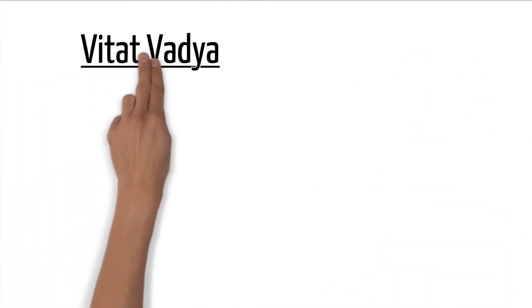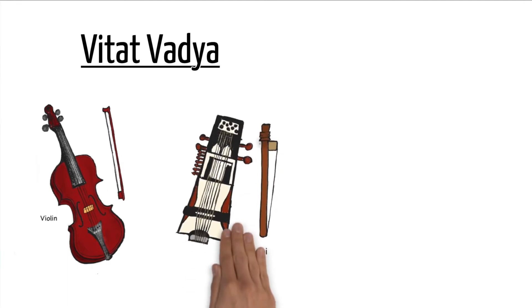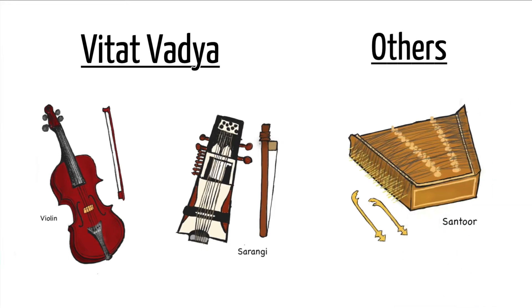We also have string instruments that are played with the bow, which are known as the vithad vadya. These include violin and sarangi. Some string instruments are also outside the tat and vithad vadya — for instance, the santur, which is a string instrument played by striking the strings with a hammer.